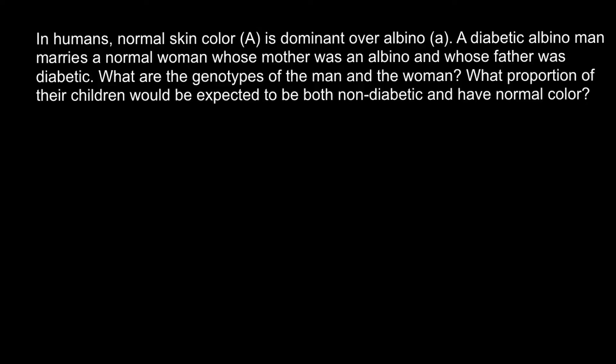Hello and welcome to Nikolai's genetics lessons. Today's problem: in humans, normal skin color (capital A) is dominant over albino (small a). A diabetic albino man marries a normal woman whose mother was an albino and whose father was diabetic. What are the genotypes of the man and the woman? What proportion of their children would be expected to be both non-diabetic and have normal skin color?